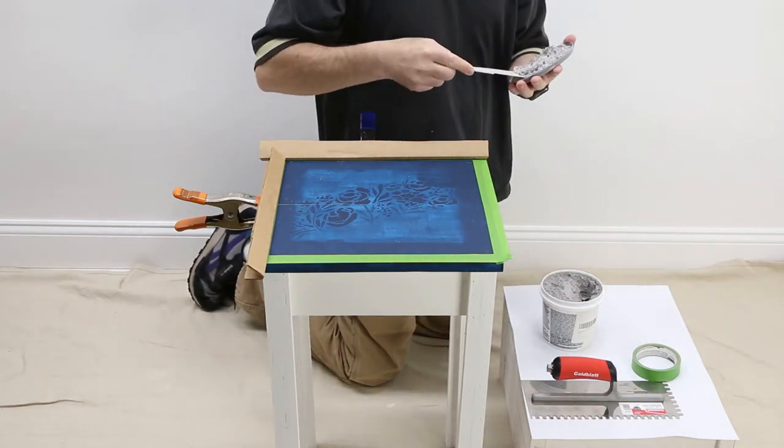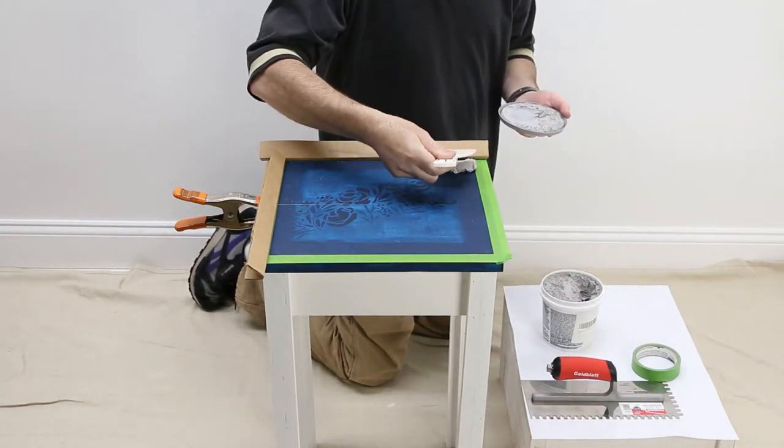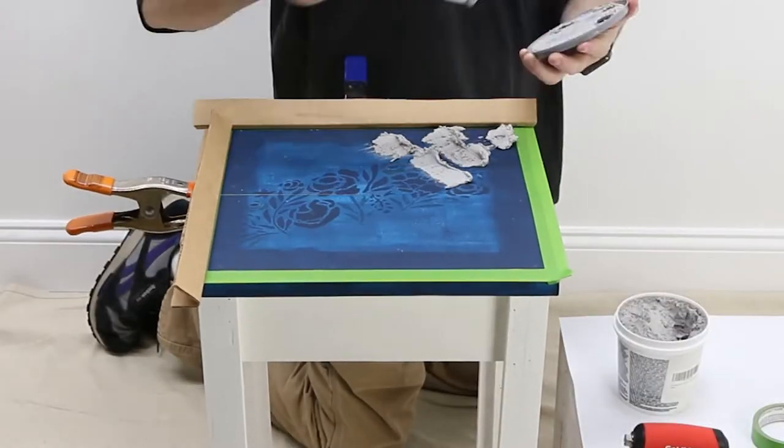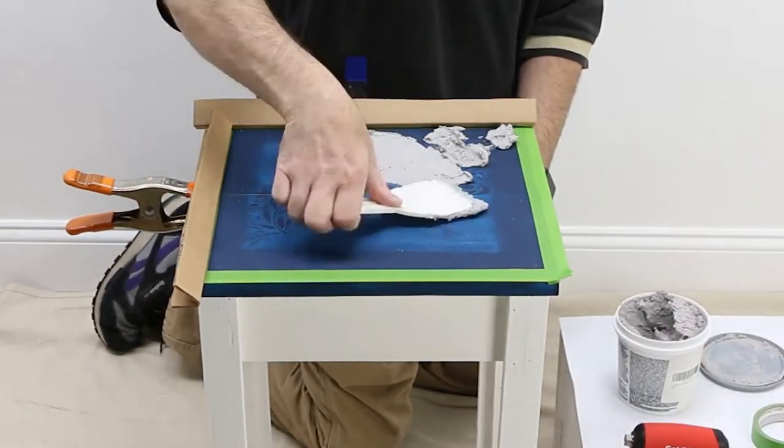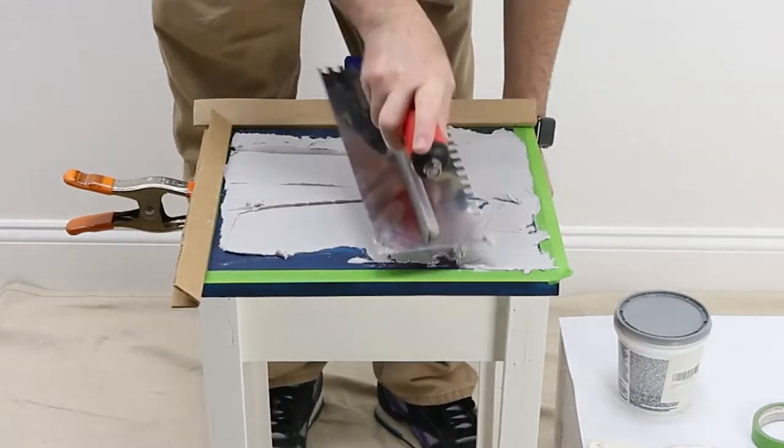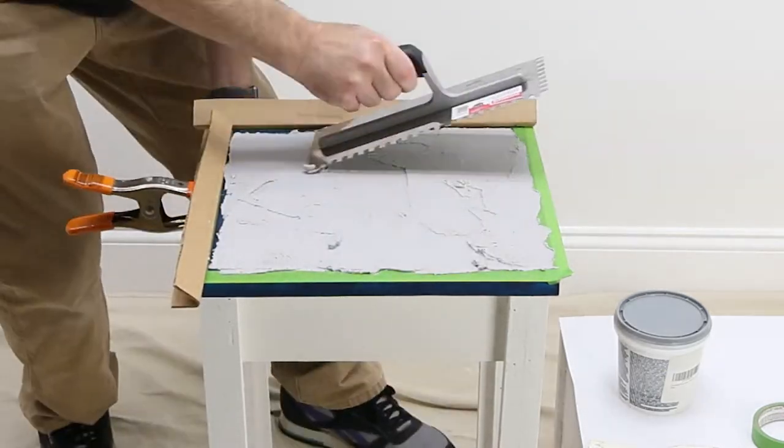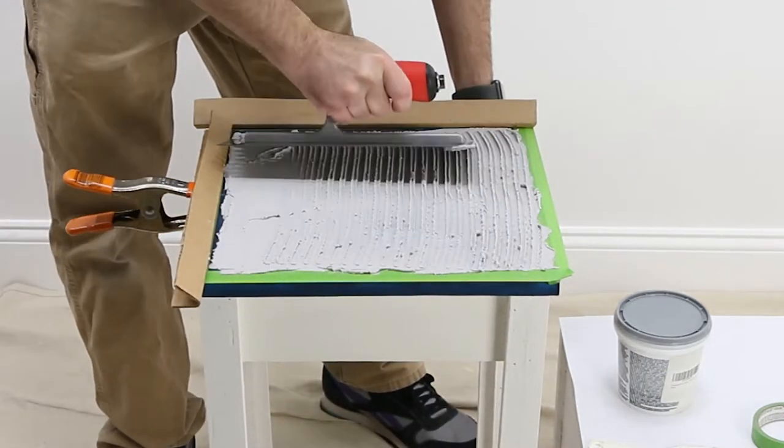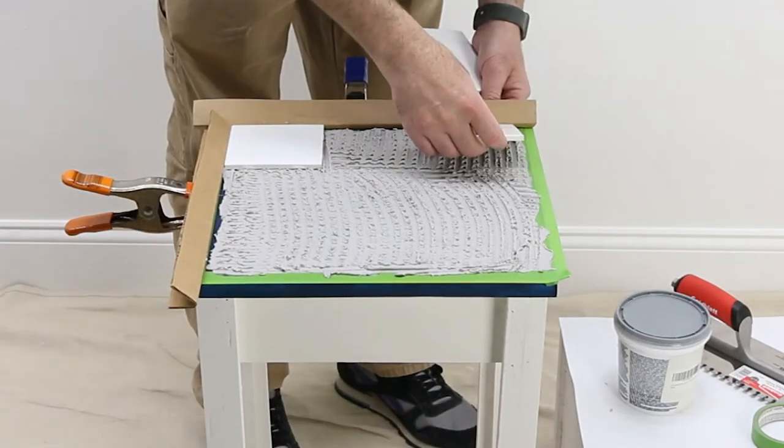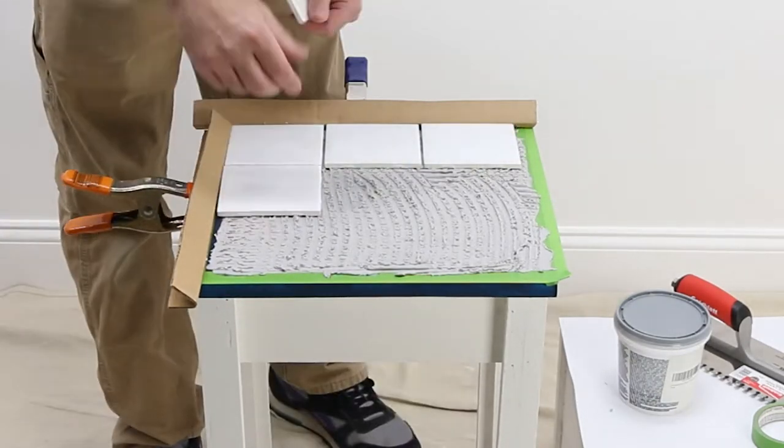Next, apply some thin-set mortar using a trowel. Place the tiles utilizing the spacers from earlier and press into place.